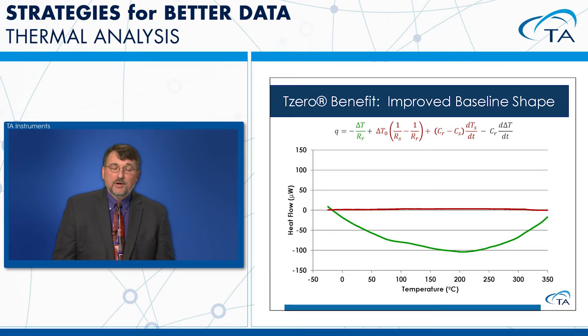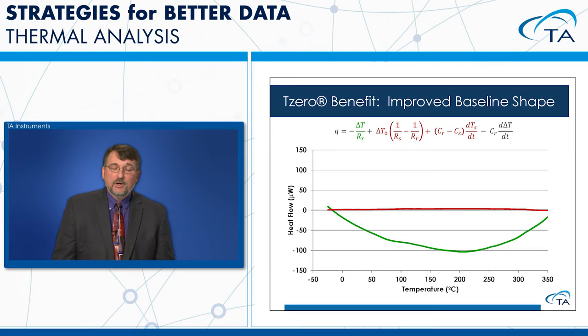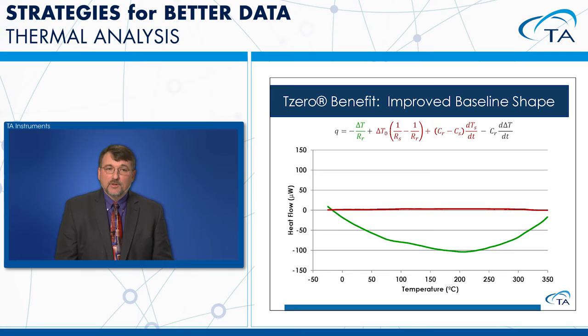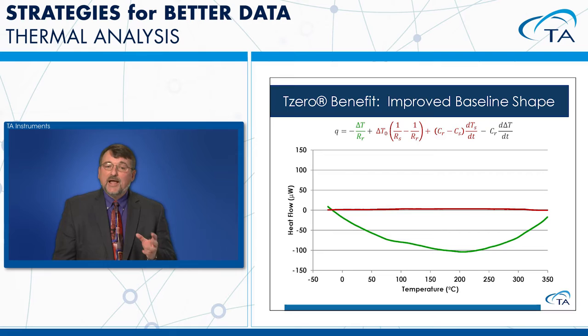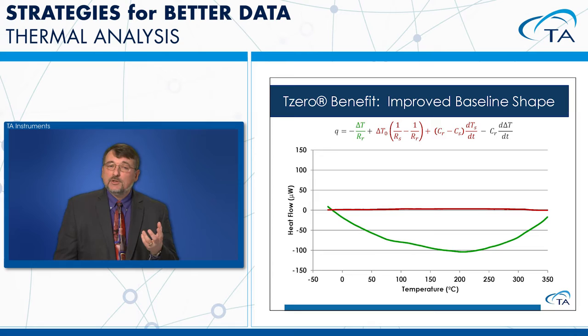The benefit of T0 calibration is demonstrated here. The green curve is a Q20 DSC, centered around zero but showing about 100 microwatts of baseline curvature. That's not bad compared to some DSCs on the market, but we believe it should be better. The Discovery DSC, shown in red, gives a nice flat line at zero — the best baseline performance.